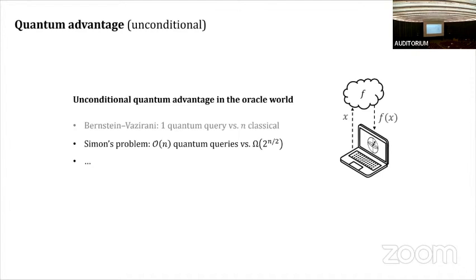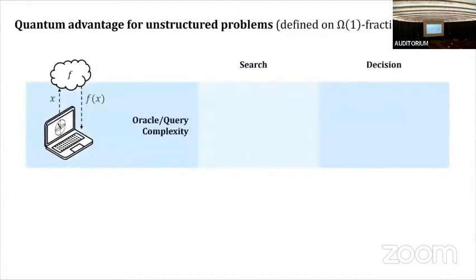And that relationship has been explored a fair amount. And surprisingly, well maybe not so surprisingly these days, but a fundamental result in this area is that actually if you consider unstructured problems, so here these are query problems but where the function is drawn from a set of functions that's at least a constant fraction of all functions, that there's only at most a polynomial quantum advantage. So there is some quantum speed up, but it seems like for decision problems, you can't do much better with a quantum computer.